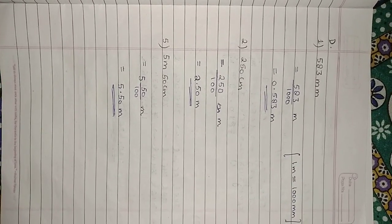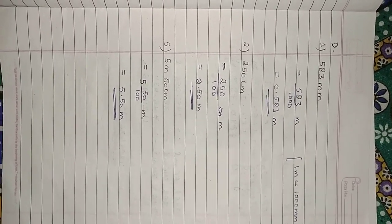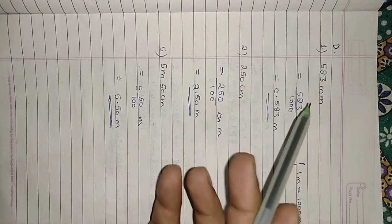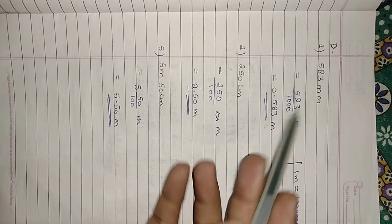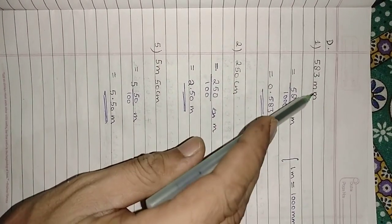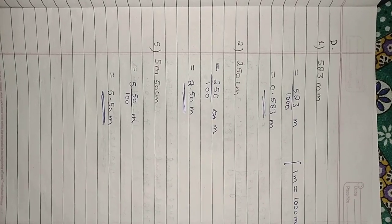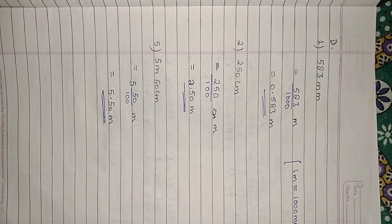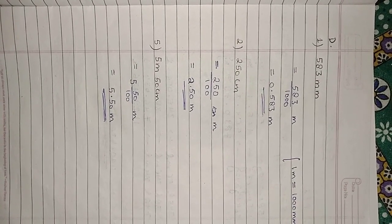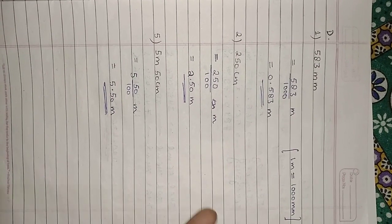Part D: write the following as decimals of a meter. We have to convert millimeters into meters.